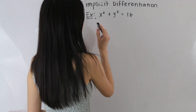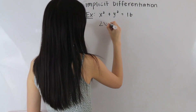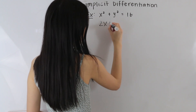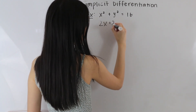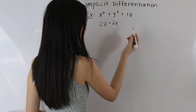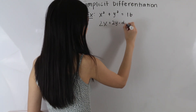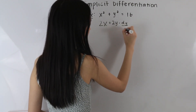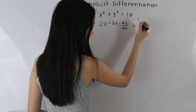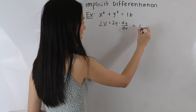The derivative of x squared is equal to 2x, and the derivative of y squared is equal to 2y. But because we are taking the derivative of a y variable, we need to multiply by dy over dx. And on the right hand side, the derivative of a constant is just equal to zero.